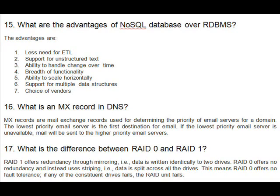Question 16: What is an MX record in DNS? MX records are mail exchange records used for determining the priority of email servers for a domain. The lowest priority email server is the first destination for email. If the lowest priority email server is unavailable, mail will be sent to the higher priority email servers.